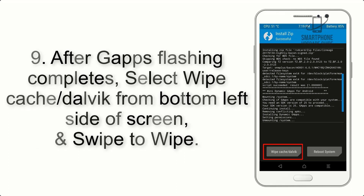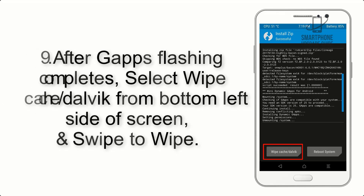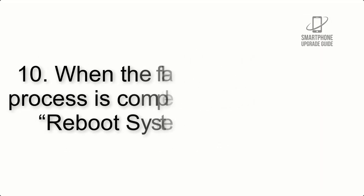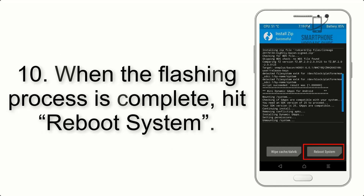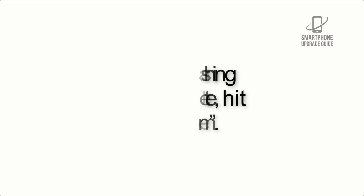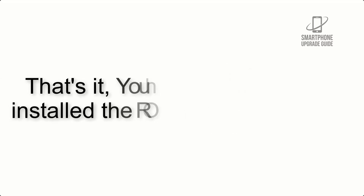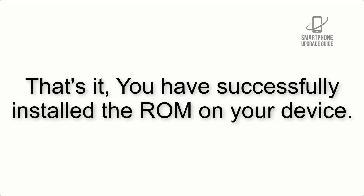Step 9: After GApps flashing completes, select Wipe Cache and Dalvik from the bottom left side of the screen and swipe to wipe. Step 10: When the flashing process is complete, hit Reboot System. That's it — you have successfully installed the ROM on your device.